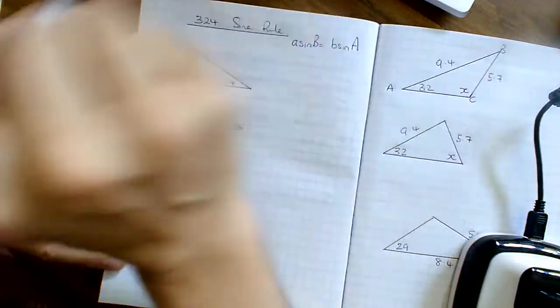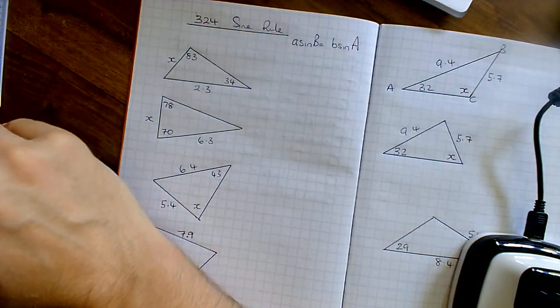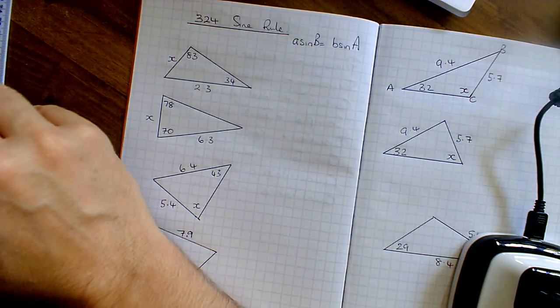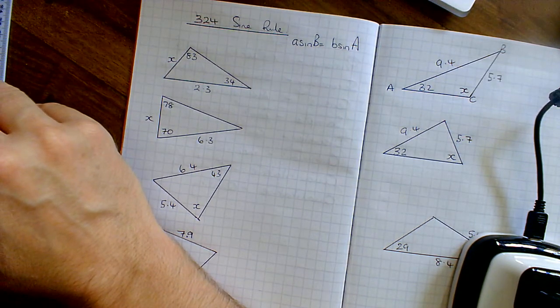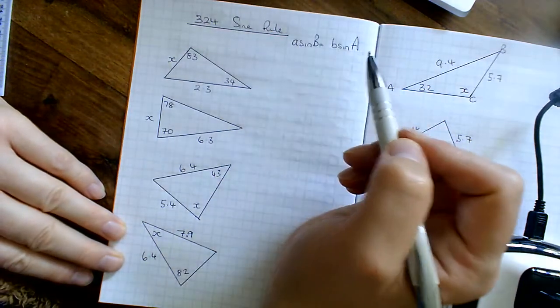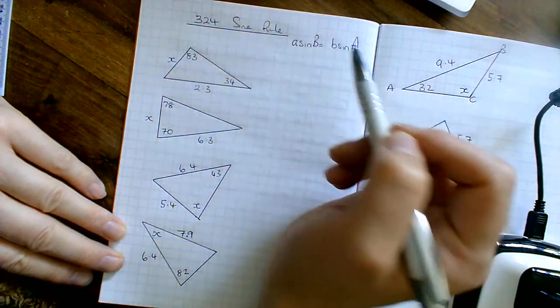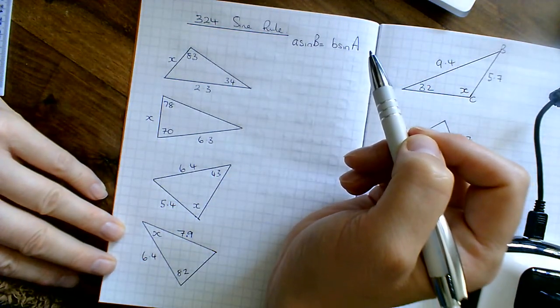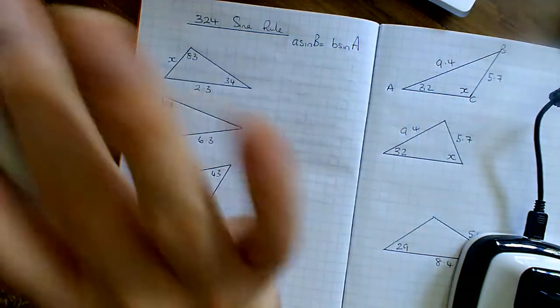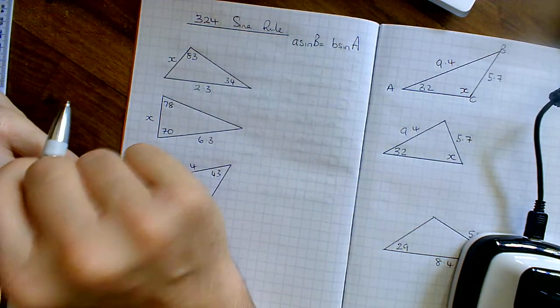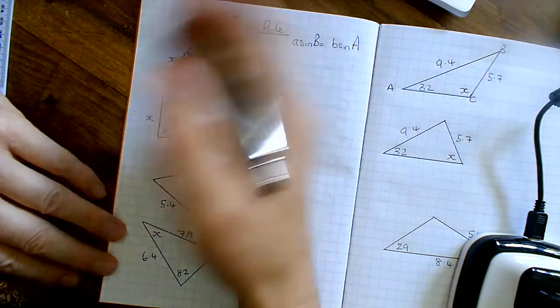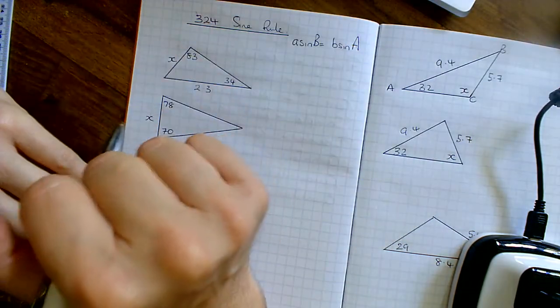I don't bother with the C part because it's pointless really. A and B are the angles and the sides, so lowercase is always the side and uppercase is always the angle. The first thing you do is label up, and if there's any labels already on just ignore them, cross them off.